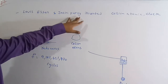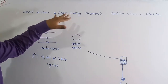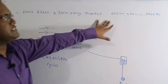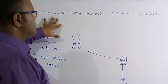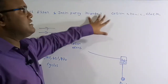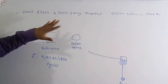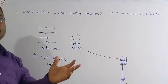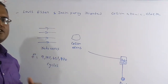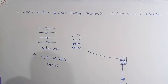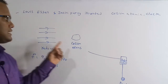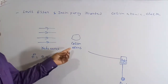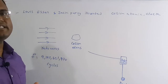Louis Essen and Jack Parry are the two people who invented the world's first cesium atomic clock. The main function of the cesium clock is that no matter where you take it in the galaxy, the time is always fixed, because the cesium atoms operate based on a constant transition.